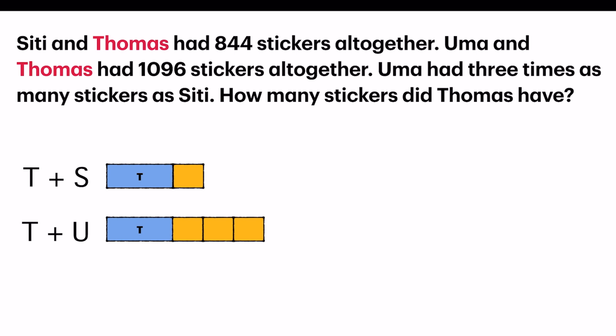Now I shall place the things that I know into the model. Thomas plus Siti is 844. The second part, Uma and Thomas had 1096.